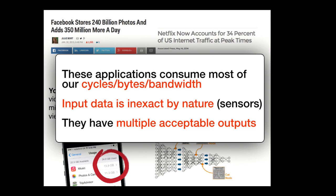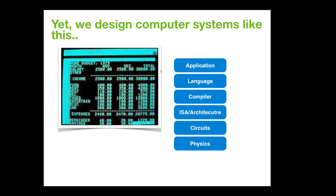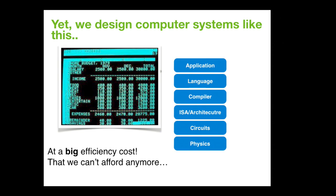These applications today consume most of the cycles of compute, bytes of storage, and network bandwidth that we have. The input to these applications is often inexact by nature because they come from sensors, and they all have multiple acceptable outputs. Yet we design computer systems with physics at the bottom, then circuits, architecture, compiler, language, and application — all striving to make them general, precise, and mostly deterministic. We're essentially designing computers to run spreadsheets, and this comes at a big efficiency cost we can no longer afford.